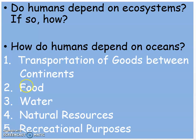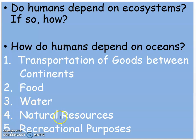Number two, for food. Number three, for water. Number four, natural resources. And number five, recreational purposes such as swimming, skiing, boating, and fishing.